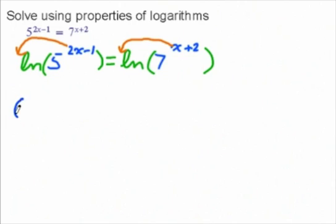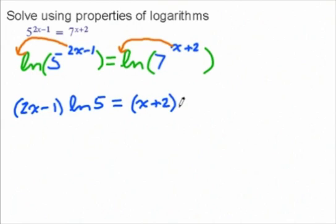Just make sure you leave them in parentheses because they are quantities. So we have 2x minus 1, it'll be times ln of 5. And over here we're going to get the quantity of x plus 2 times ln of 7. And if you want, you can leave parentheses around the 5 and the 7 so you remember that those are functions attached to those numbers.